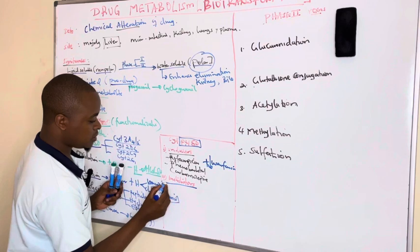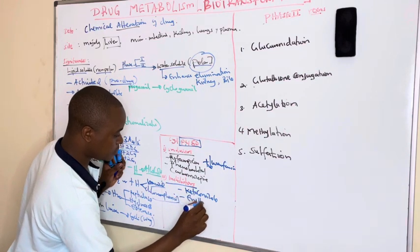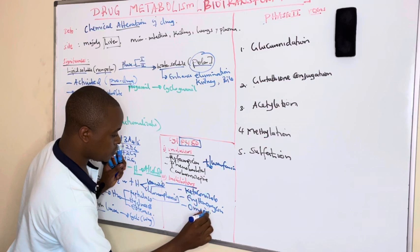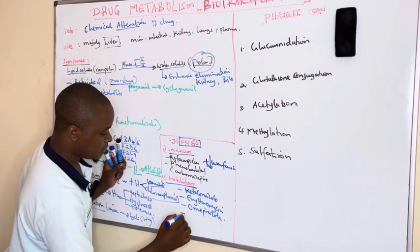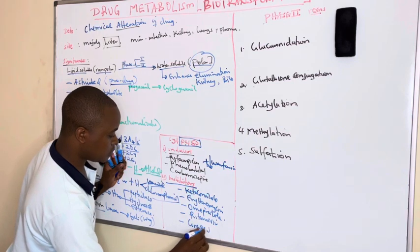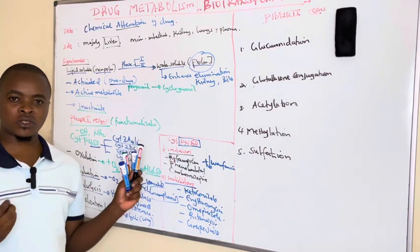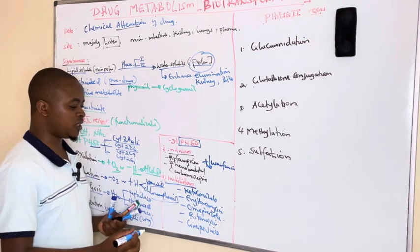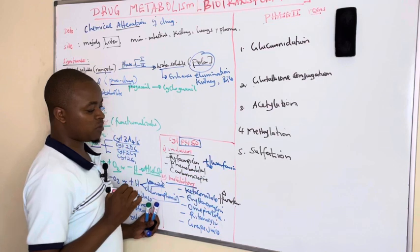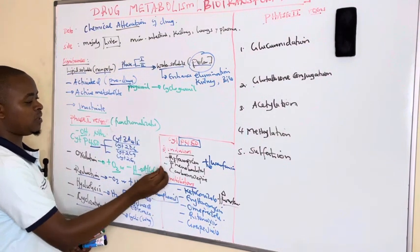Inhibitors of cytochrome P450 include ketoconazole, omeprazole, ritonavir (an antiviral drug), and even grapefruit juice. These drugs inhibit the action of the cytochrome P450 oxidation-reduction enzymes. When taken with warfarin, they raise its plasma concentration, which can lead to bleeding and even death.